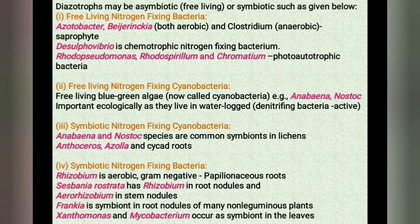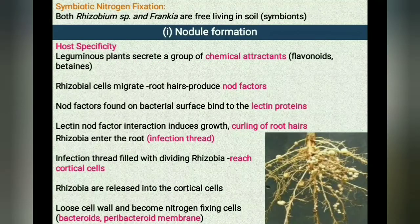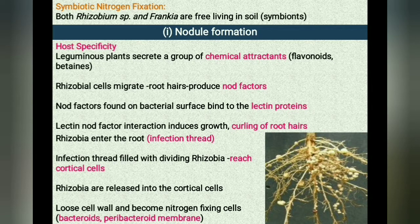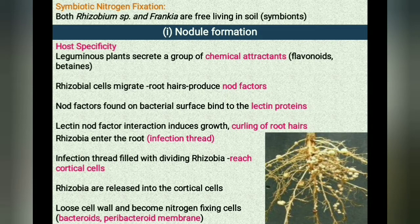Several species of Rhizobium live in the soil but are unable to fix nitrogen by themselves. In symbiotic nitrogen fixation, both Rhizobium and Frankia exist as free-living and as symbionts in the soil, but only as symbionts can they fix atmospheric nitrogen. Root nodule formation is the first step in symbiotic nitrogen fixation. The roots of leguminous plants secrete chemical attractants like flavonoids and betaines in the rhizosphere.